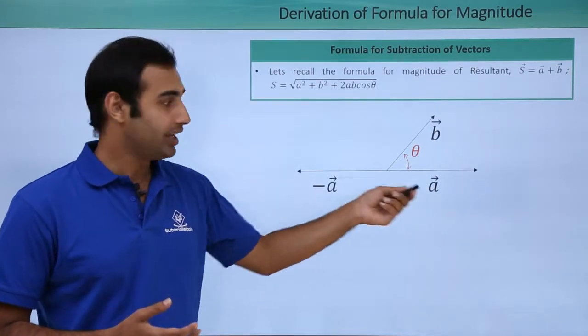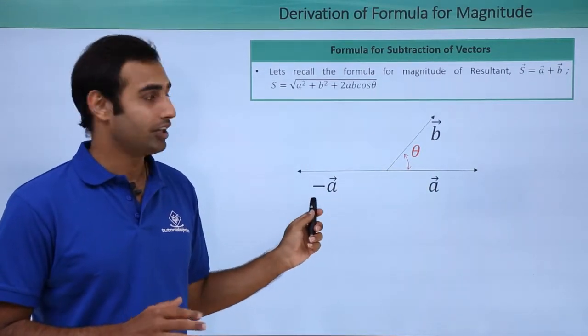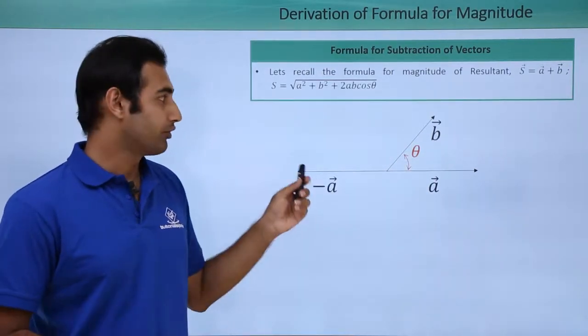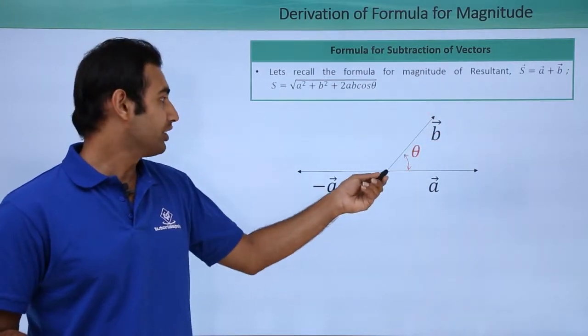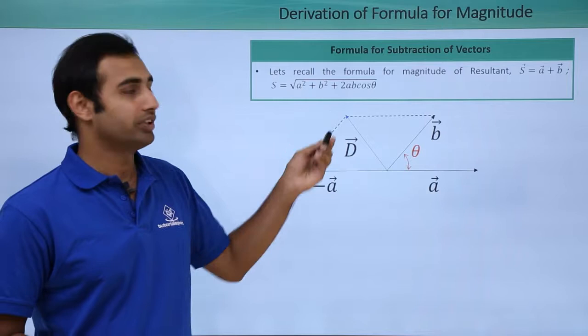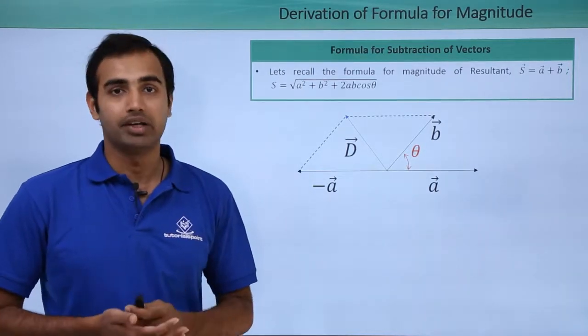I have to first of all interpret a into minus a. That's exactly what I have done here. In order to add b and minus a now using parallelogram law, I have to complete the parallelogram and join this body diagonal. So I complete the parallelogram and join this body diagonal. This gives me my d vector.